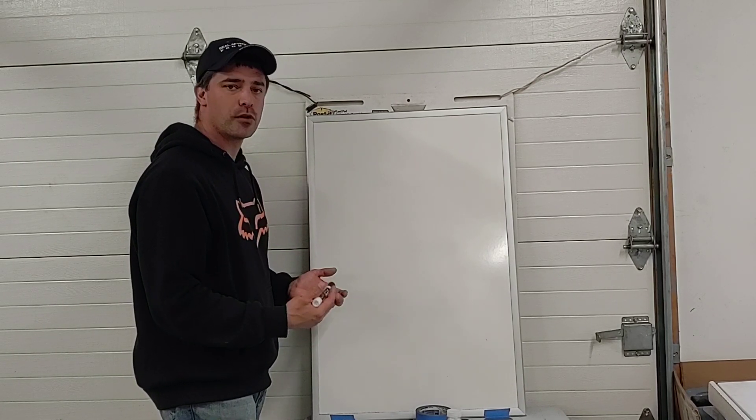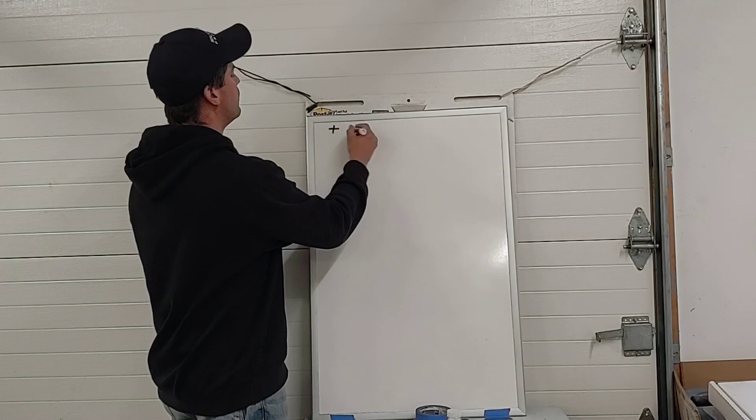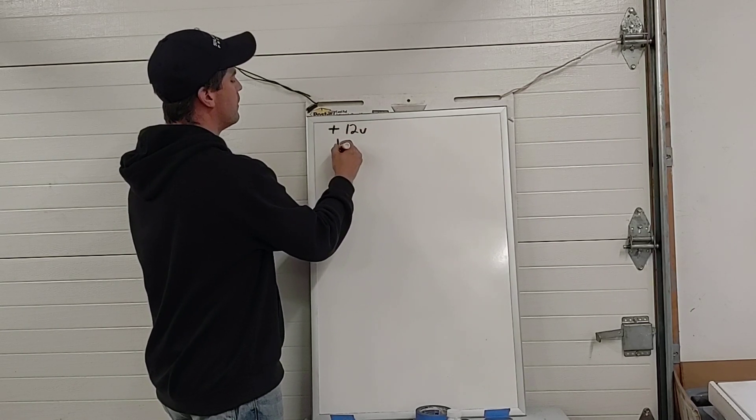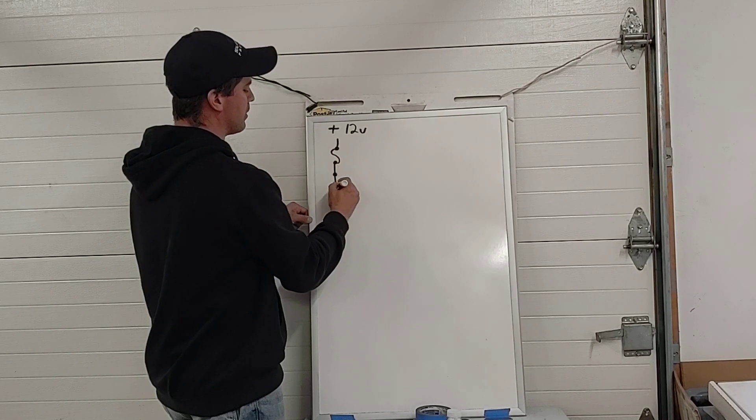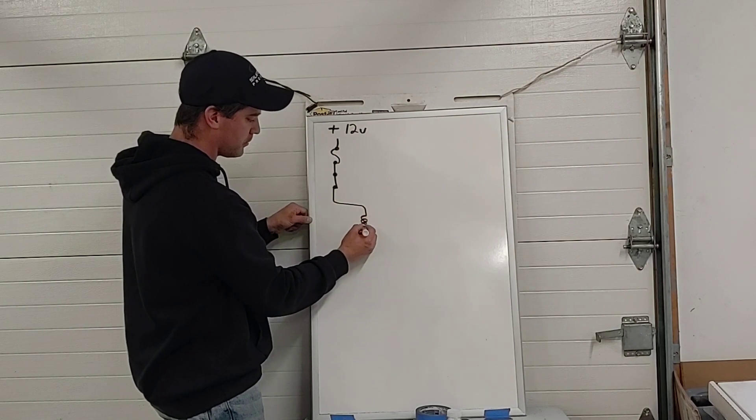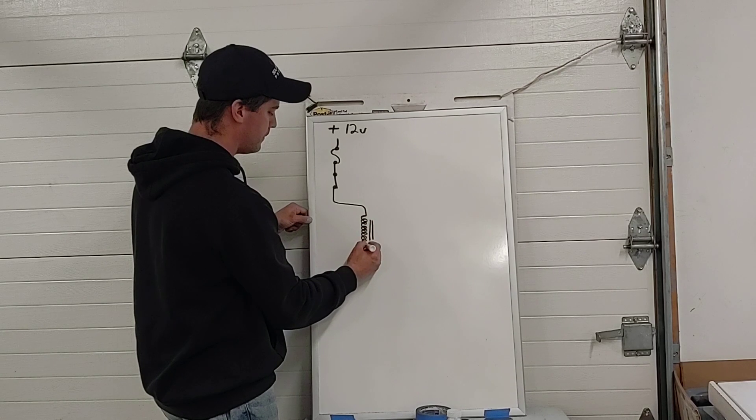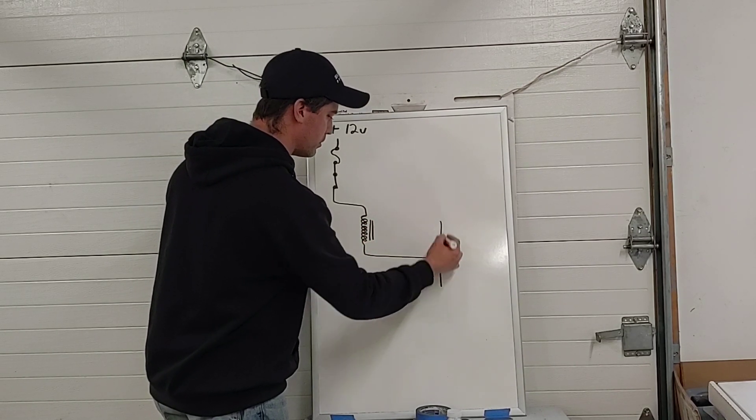And to understand the waveform we have to understand how the injector circuit works. So basically we have 12 volts, we'll pass through a fuse, pass through our ignition switch, to the coil of our fuel injector. That's the symbol for the coil. The other side of our fuel injector is going to connect to our PCM.